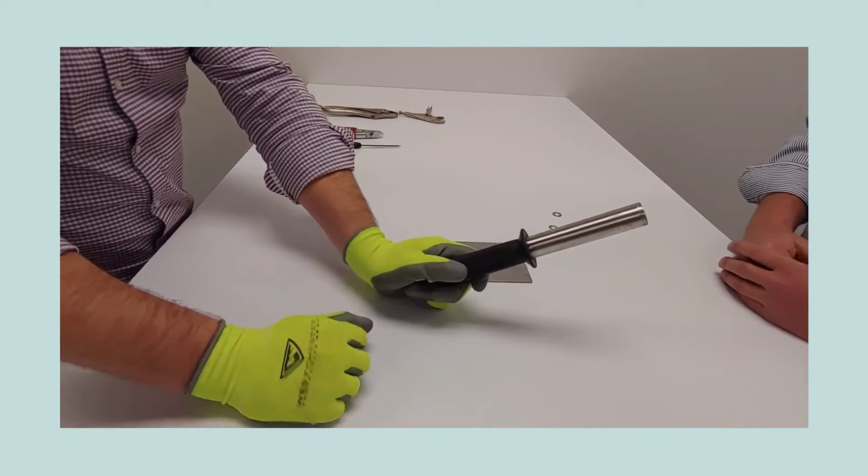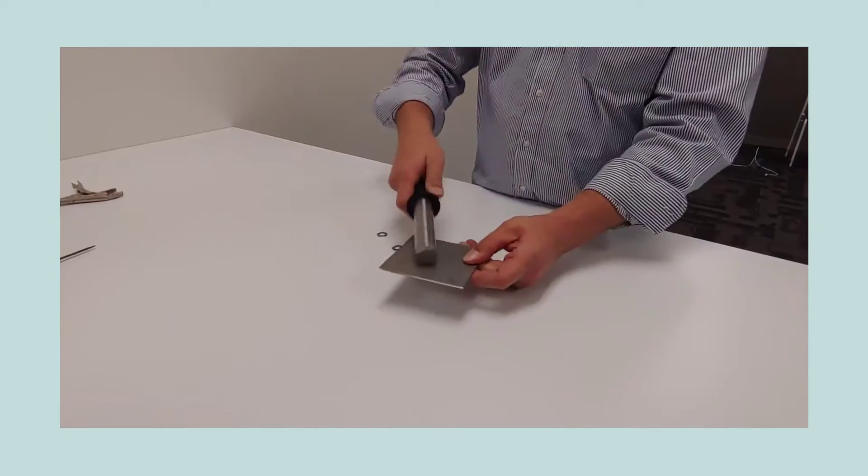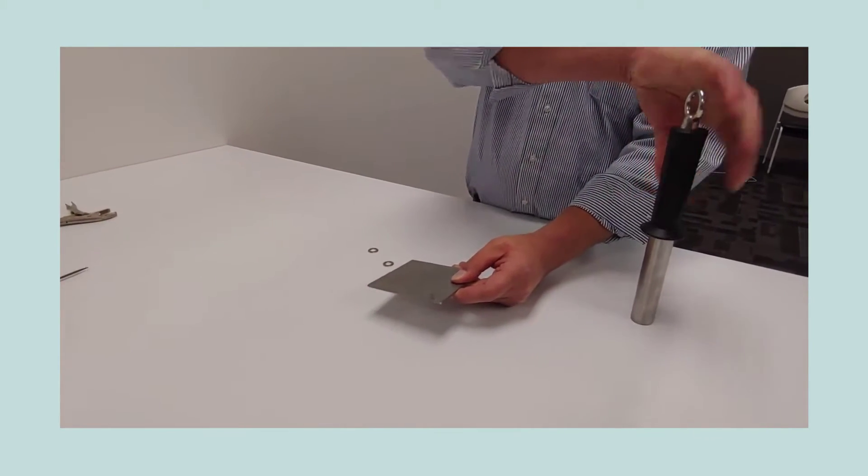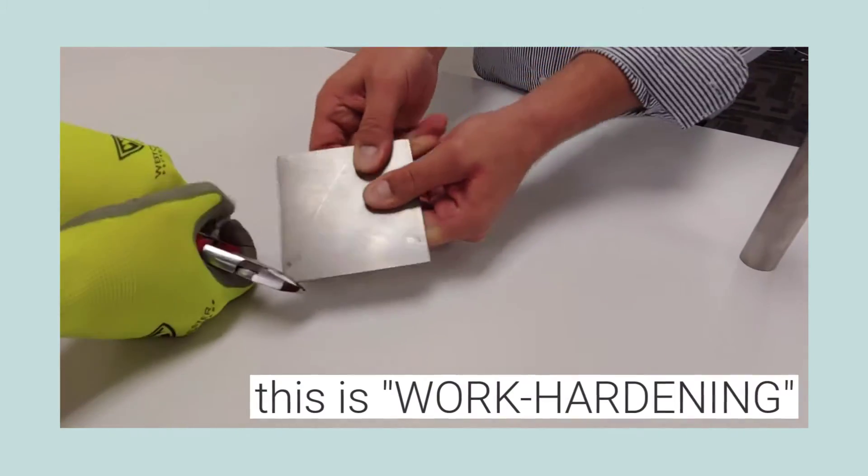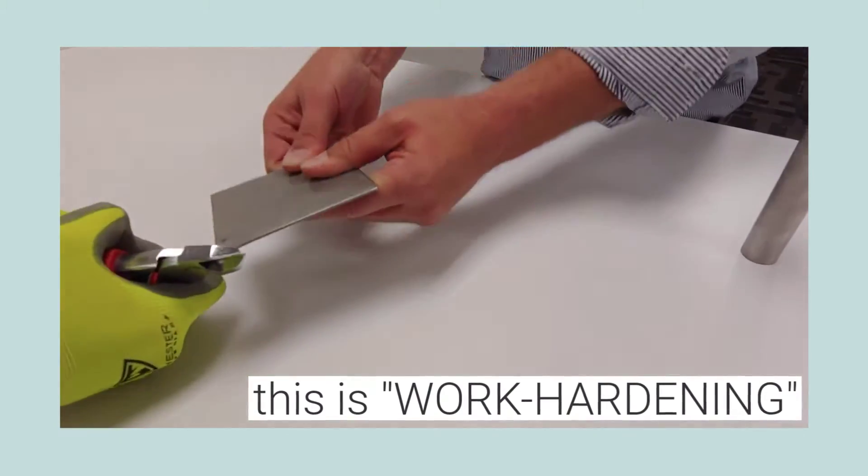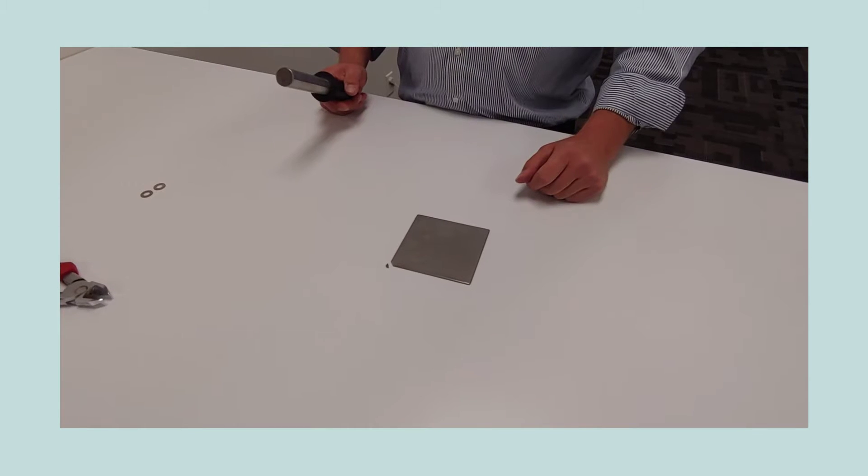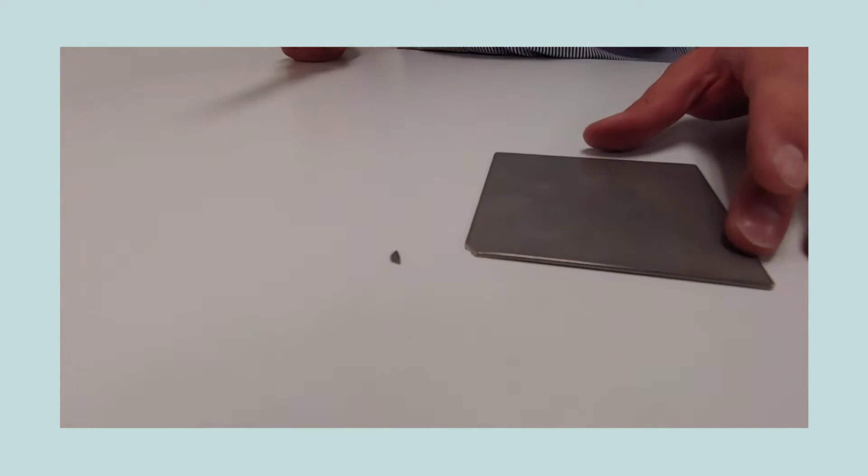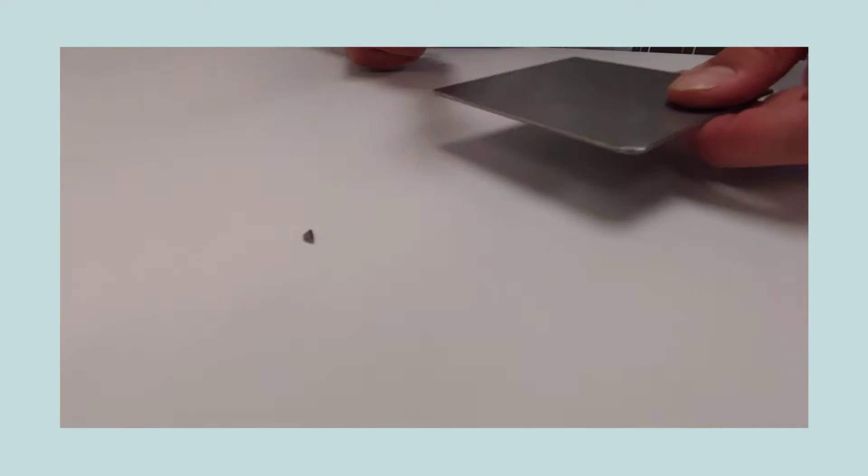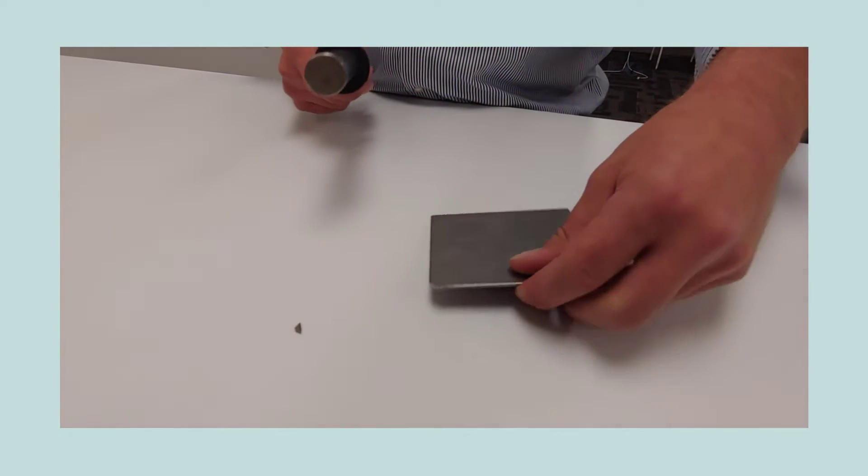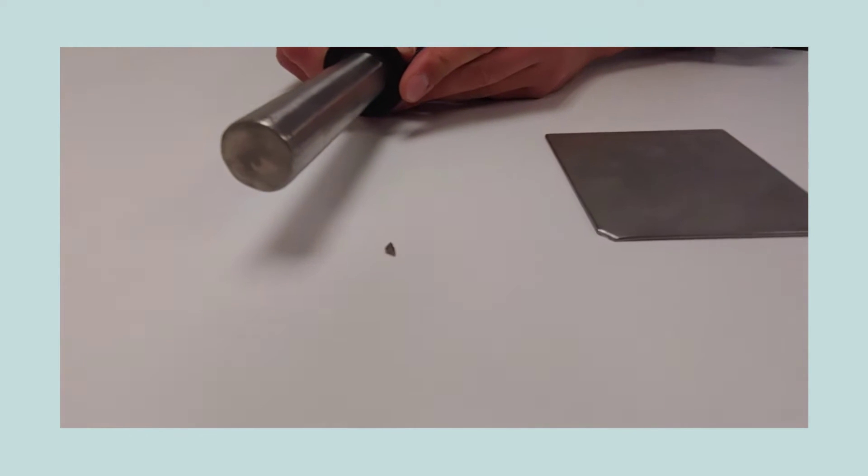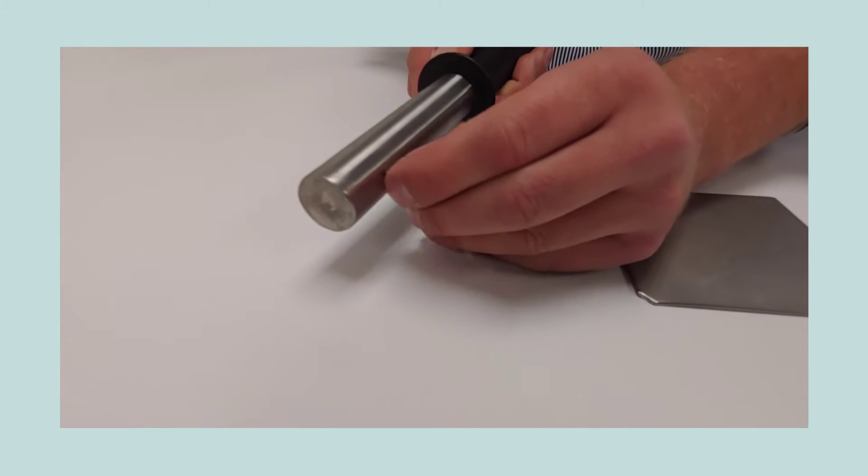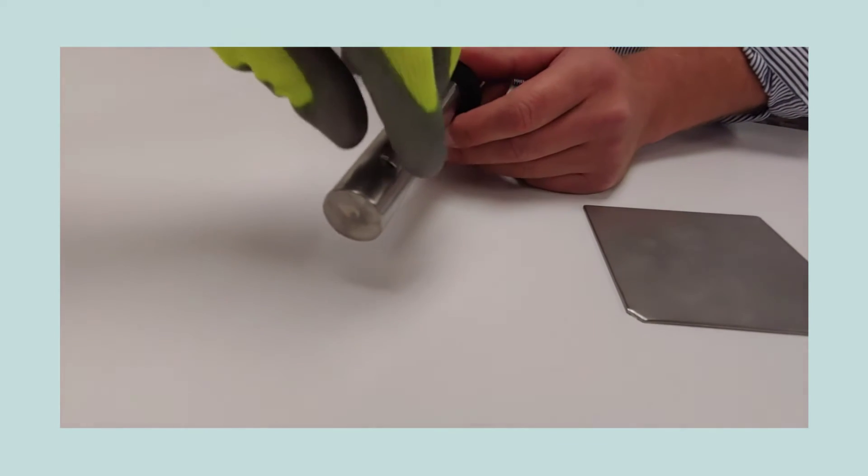Here we have the little fragment that we just cut off the corner of the stainless steel plate. Again, the stainless steel plate is completely non-magnetic, but if we look at this little fragment, we can see how magnetic that has become by work hardening. The degree of magnetic susceptibility is directly related to the degree of work hardening.